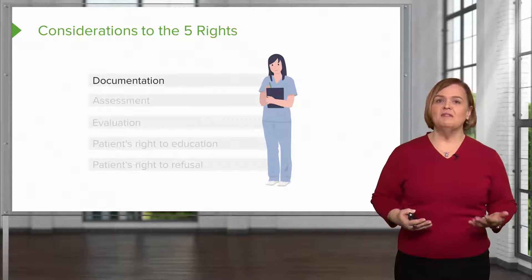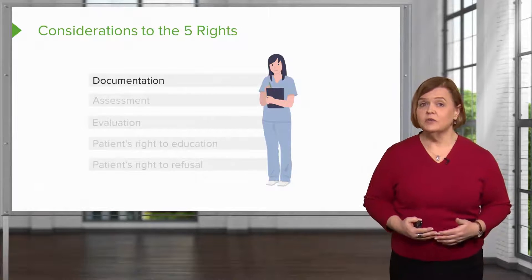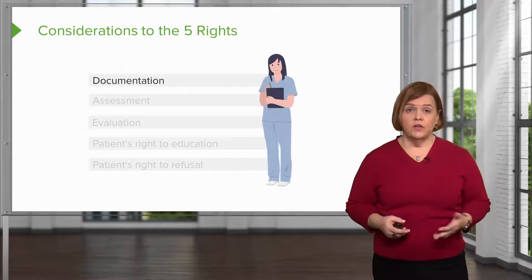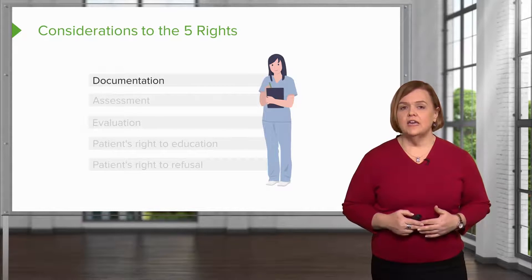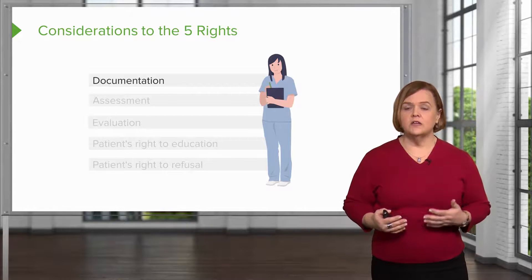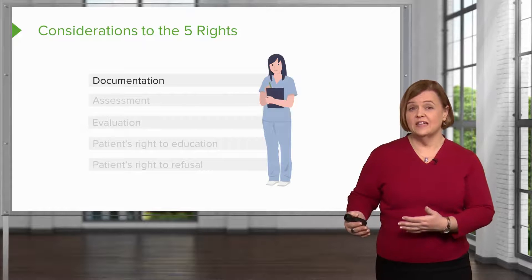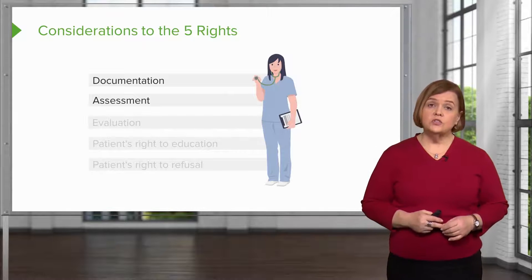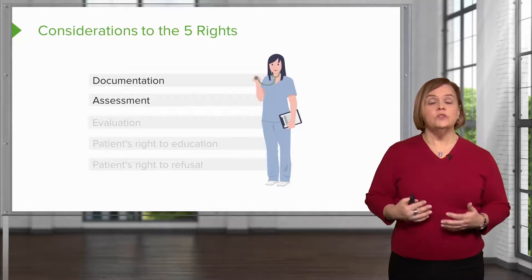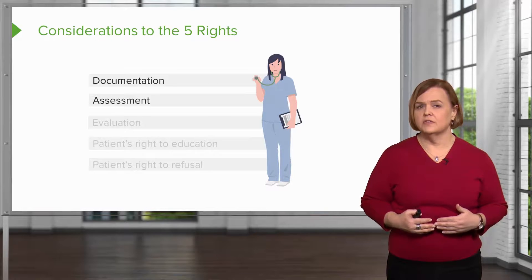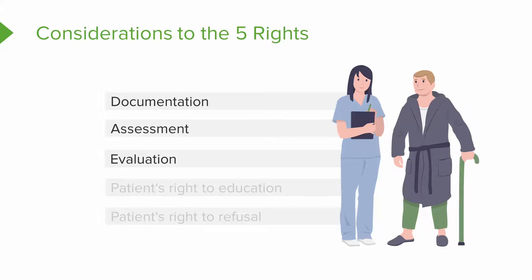Now, there are some other things that people keep adding to the five rights, and they're actually really helpful. First of all, right documentation — if it's a medication that has a certain side effect or adverse effect, you want to make sure in your documentation that you included that the patient either had signs of that or did not have signs of that adverse effect. You want to make sure that you do the appropriate assessment, and as we learn through the different drug categories and families, I'll help you understand what the most important assessments are. You want to evaluate how that patient is responding to that medication.